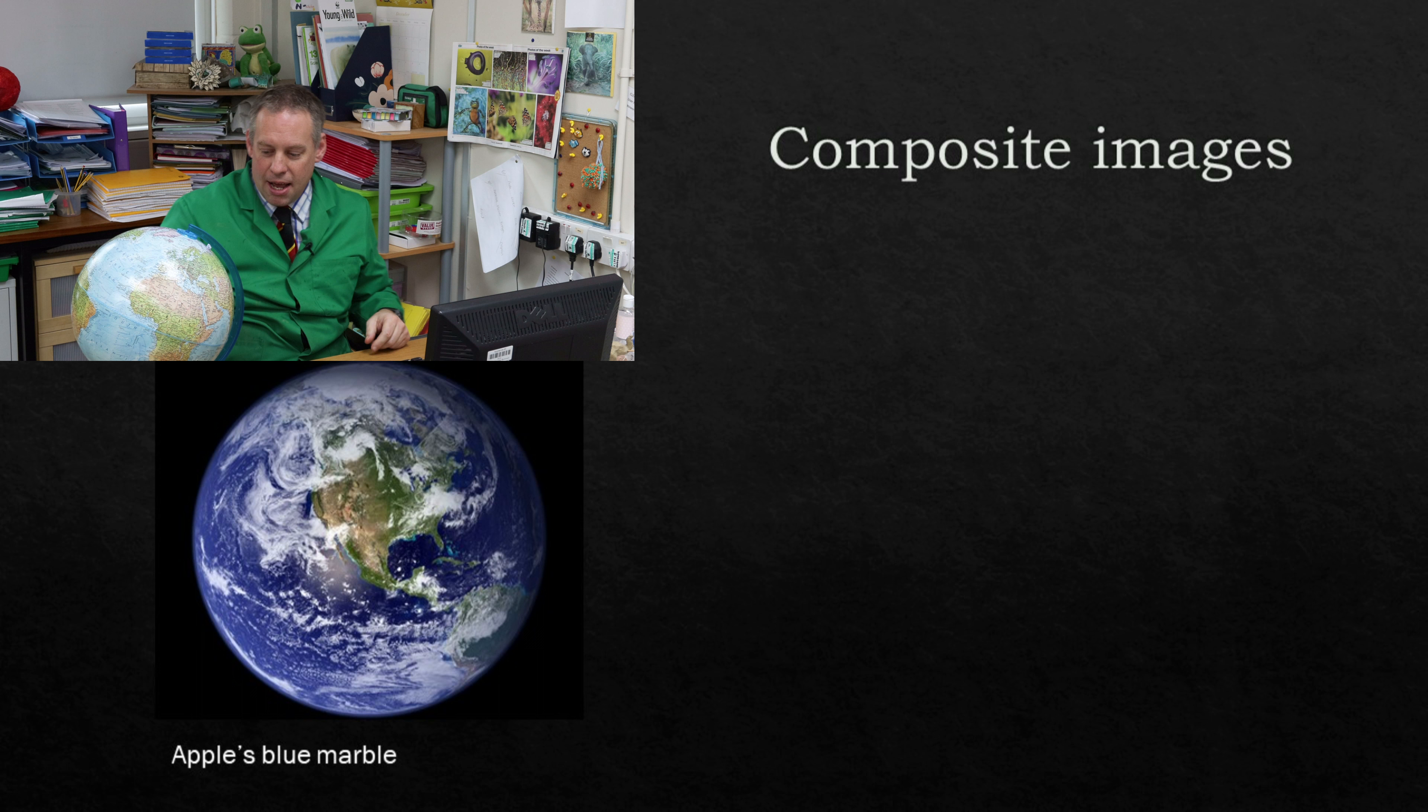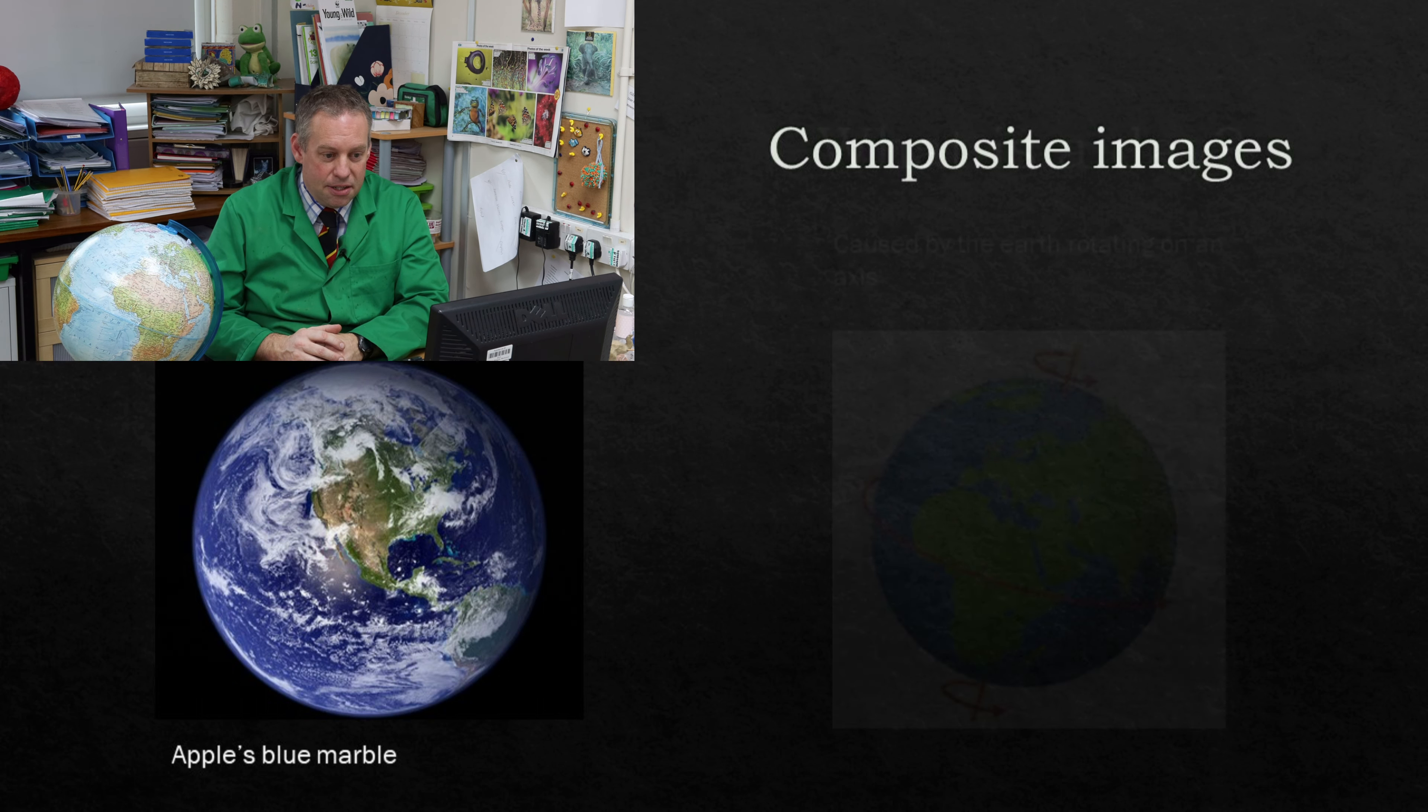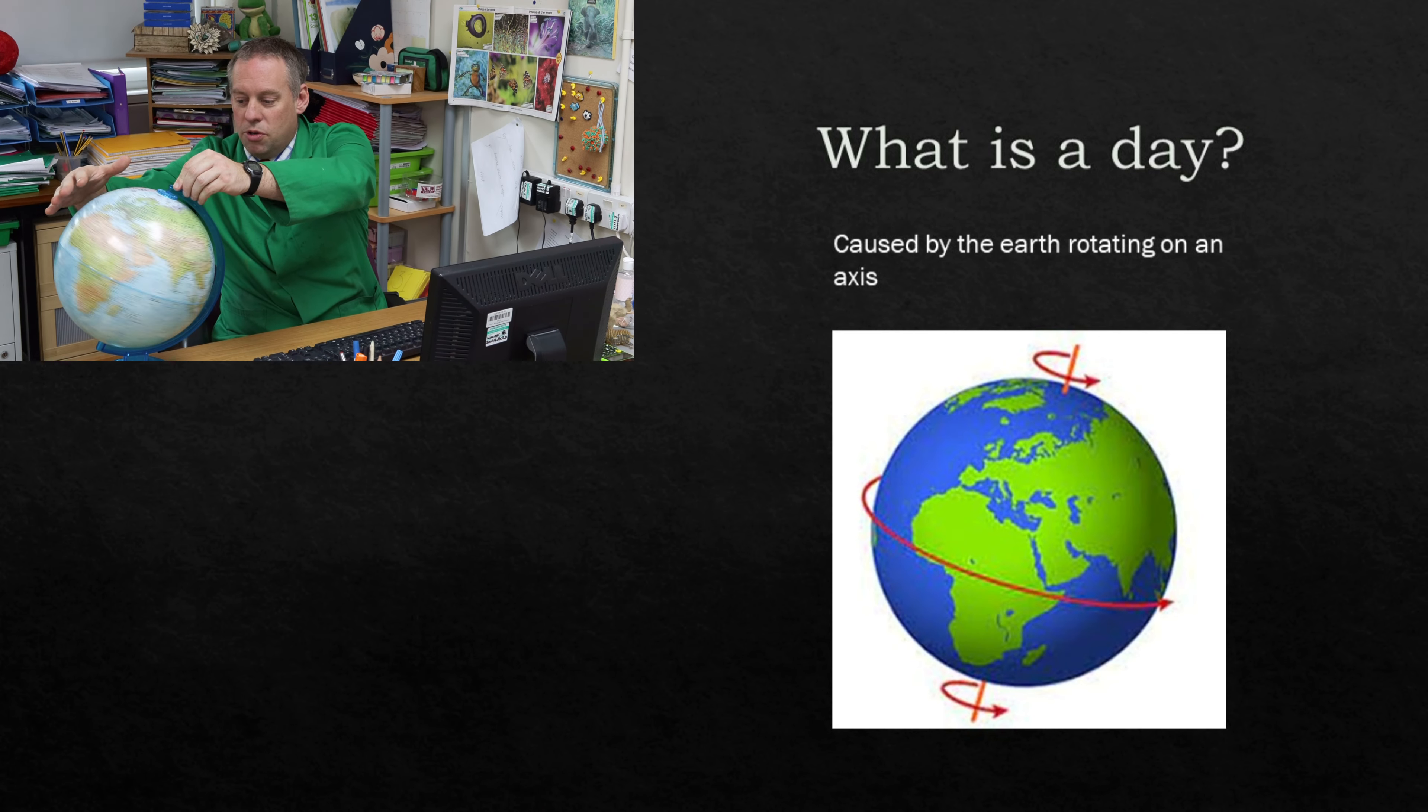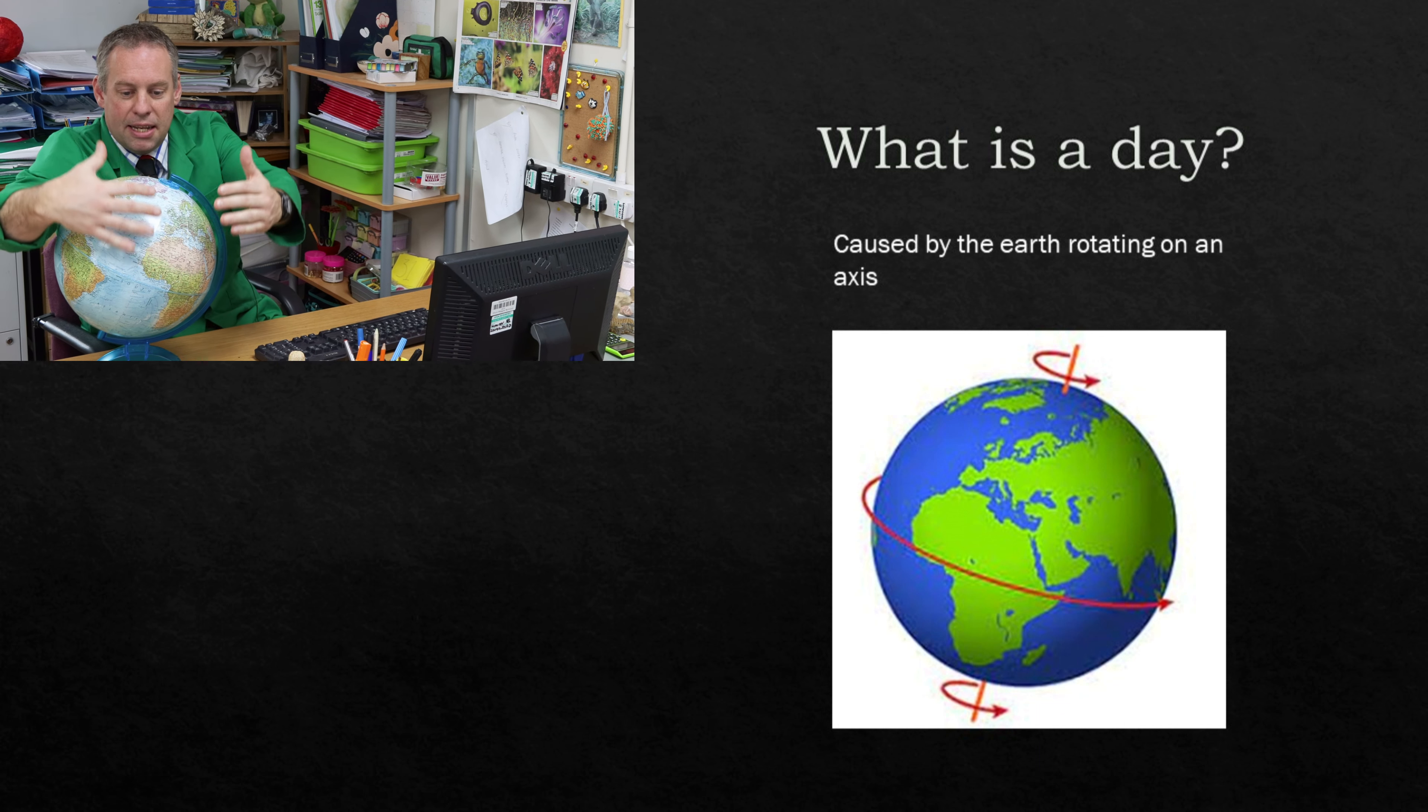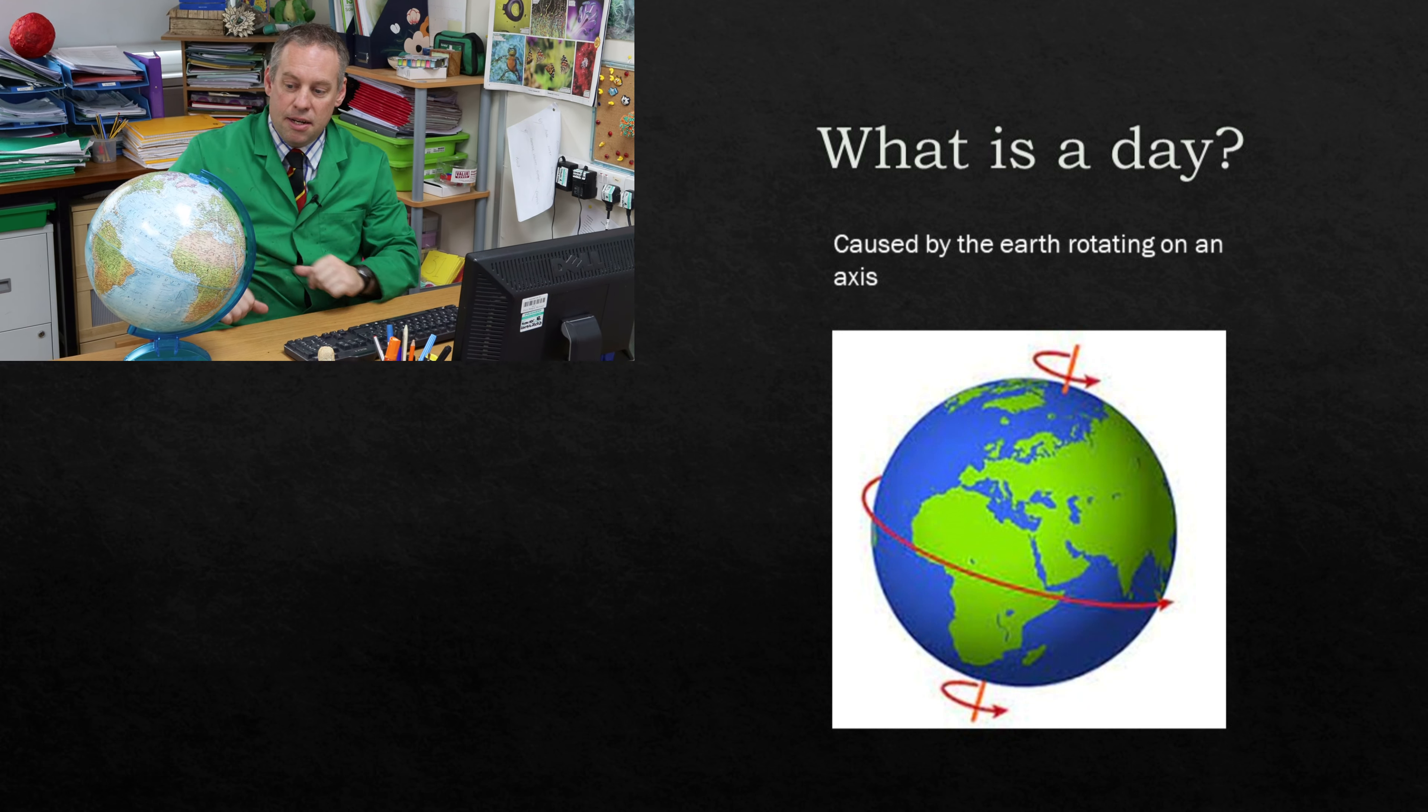Now to help demonstrate this I've got my globe here and this is going to help me show what a day is. So the first thing to notice is that the earth rotates. It spins on its axis. As it goes round part of it will be facing the sun. Let's say this part is facing the sun and this part here is in the shade. It's at night.